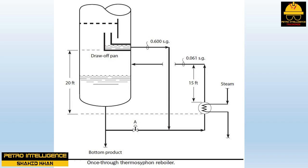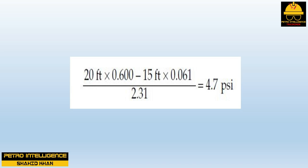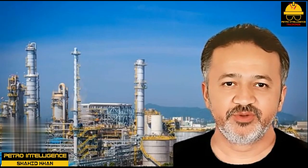This picture shows a once-through thermosyphon reboiler. The driving force to promote flow through this reboiler is the density difference between the reboiler feed line and the froth-filled reboiler return line. For example: specific gravity of liquid in the reboiler feed line is 0.600, height of liquid above the reboiler inlet is 20 feet, mixed-phase specific gravity of the froth leaving the reboiler is 0.061, and height of the return line is 15 feet. The differential pressure driving force is then (20 × 0.600 − 15 × 0.061) / 2.31 = 4.7 psi.